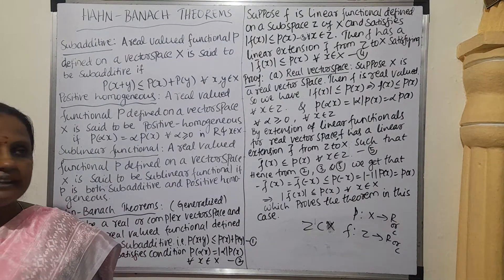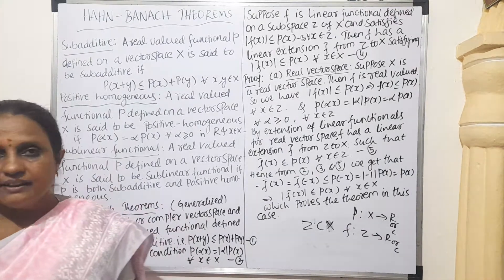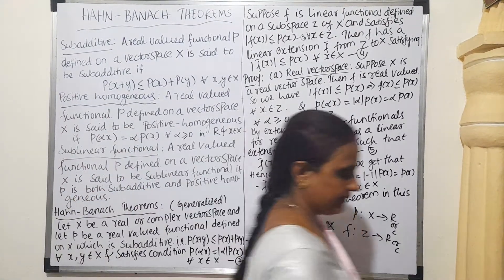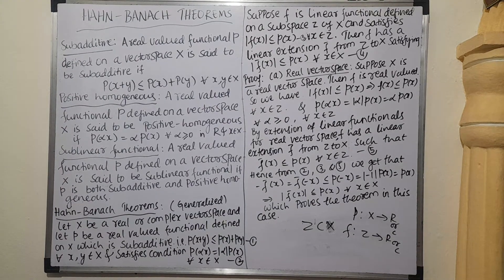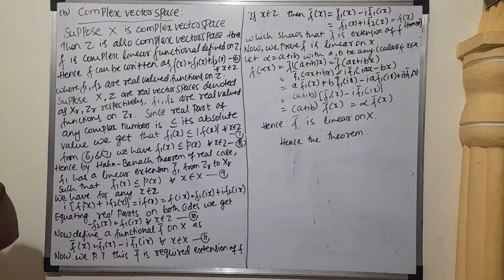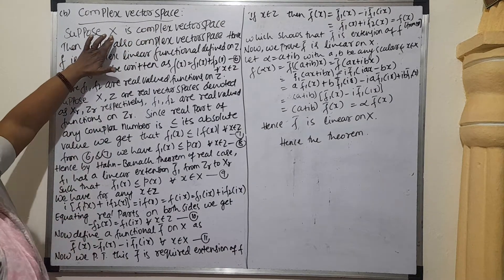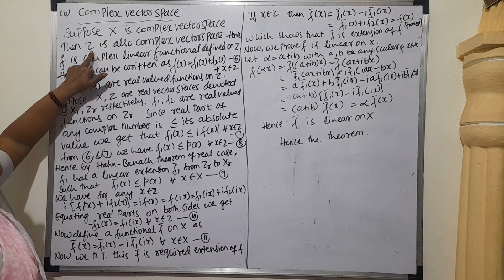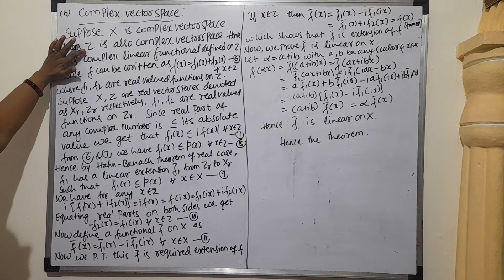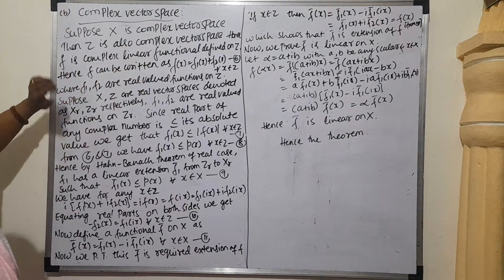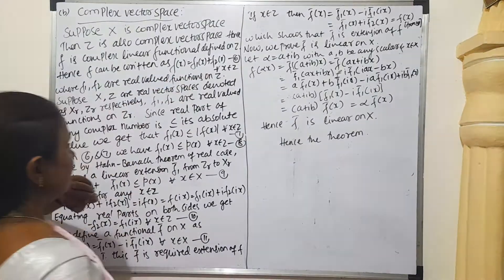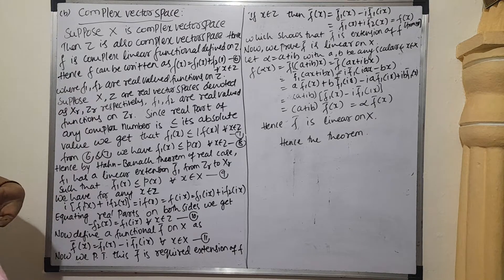Now we will see the next part of the theorem, case B: X is a complex vector space. If X is a complex vector space, its subspace Z is also a complex vector space, and the linear functional defined on Z is also a complex linear functional. A complex linear functional can be written as F(x) = F₁(x) + i·F₂(x), where F₁ and F₂ are real-valued functions on Z.